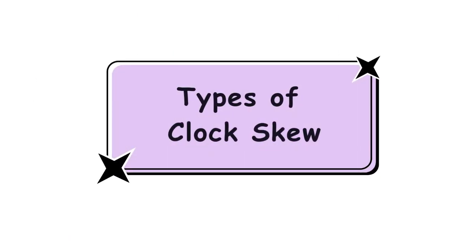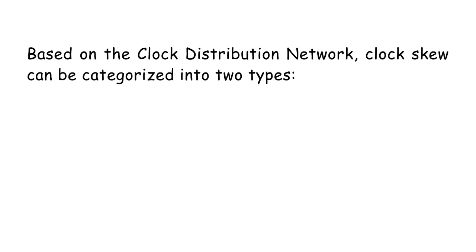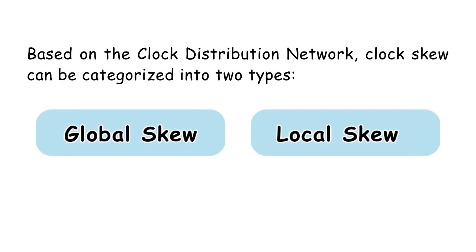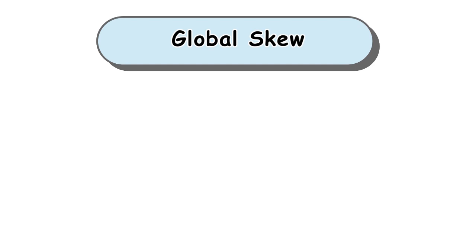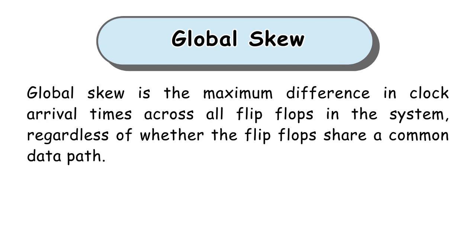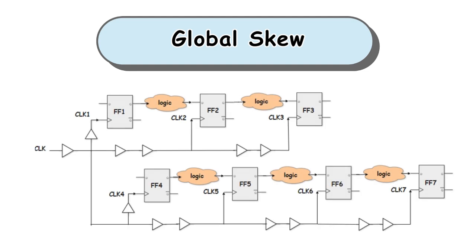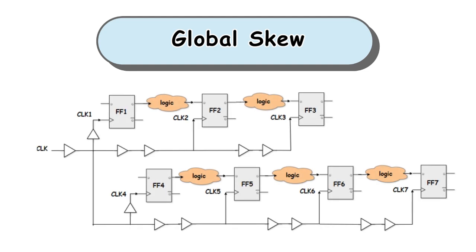Now let's see the types of clock skew. Based on the clock distribution network, clock skew can be categorized into two types: global skew and local skew. Global skew is the maximum difference in clock arrival times across all flip-flops in the system, regardless of whether the flip-flops share a common data path. Therefore, global skew is the difference between the longest and shortest clock paths in the design, as illustrated in this figure.